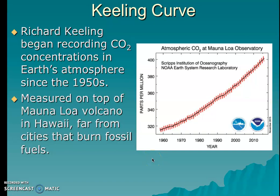Hi everyone, this is Mr. Richman, and for this video we're going to talk about the Keeling Curve. Back in the 1950s, we have a gentleman by the name of Richard Keeling, who was taking air samples at the summit of a volcano located in Hawaii. In these air samples, he was able to determine how many carbon dioxide particles were in each sample.